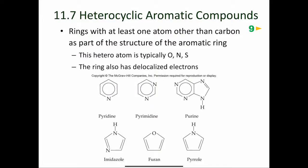Heterocyclic aromatic compounds are those having at least one atom other than carbon as part of the structure of the aromatic ring. The structures and common names of several heterocyclic aromatic compounds are shown here. We have pyridine, pyrimidine, purine, imidazole, furan, and pyrrole.